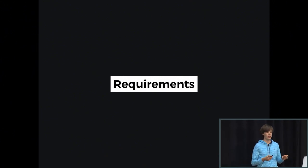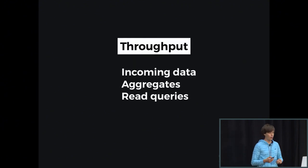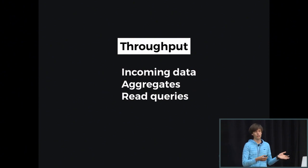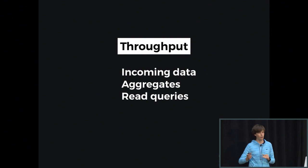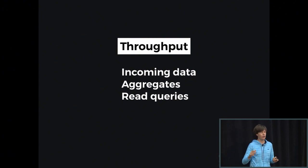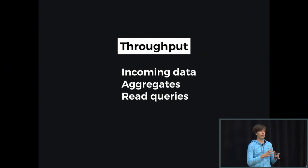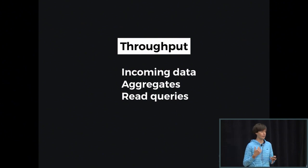When you think of Time Series, you have to set up certain expectations or requirements. What do we expect from a reasonably good application dealing with Time Series? First and foremost is throughput, which can be roughly divided into several components. One is incoming data — for instance, you have a server being monitored by a daemon like CollectD, which collects data about your CPU and memory and sends it to Cyanide or Graphite. The more servers you get, your application has to stay online and handle the load.